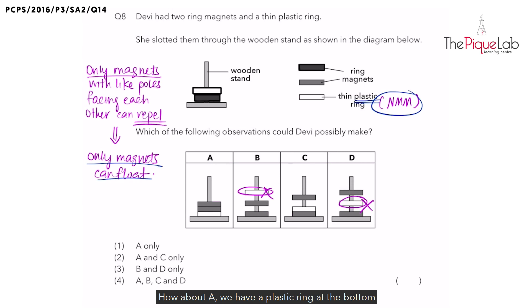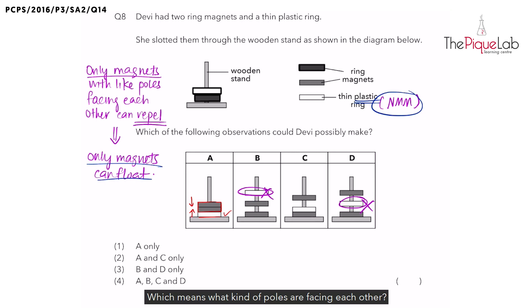How about A? We have a plastic ring at the bottom and we have two magnets on top of the plastic ring. The plastic is not floating, so that is fine. How about the two magnets? They are not floating as well, which means they are not repelling. So what's happening between these two magnets if they are not repelling? Yes, they must be attracting each other. Which means unlike poles are facing each other, causing them to attract. So let's write this down. Unlike poles facing each other and therefore they are attracting. So A is possible.